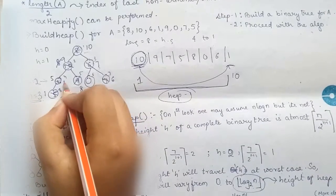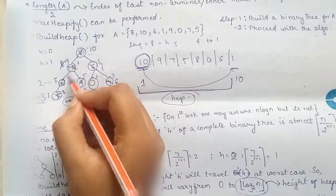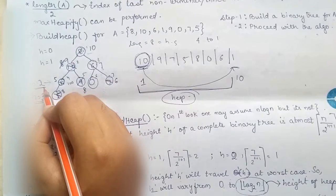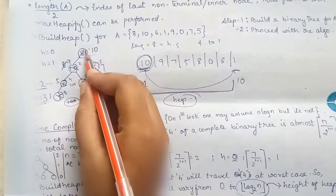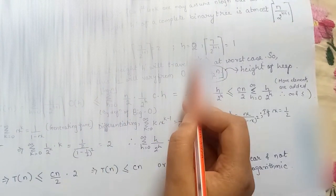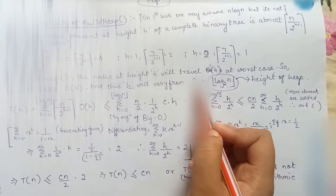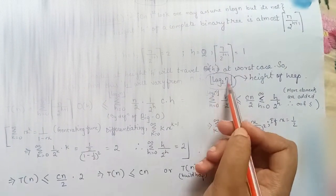If this 100 was at the height h equal to 2 then it has to travel this much height, this much distance to be at the top. Therefore the node at height h will have to travel h distance at worst case and this h will vary from 0 to log n base 2.